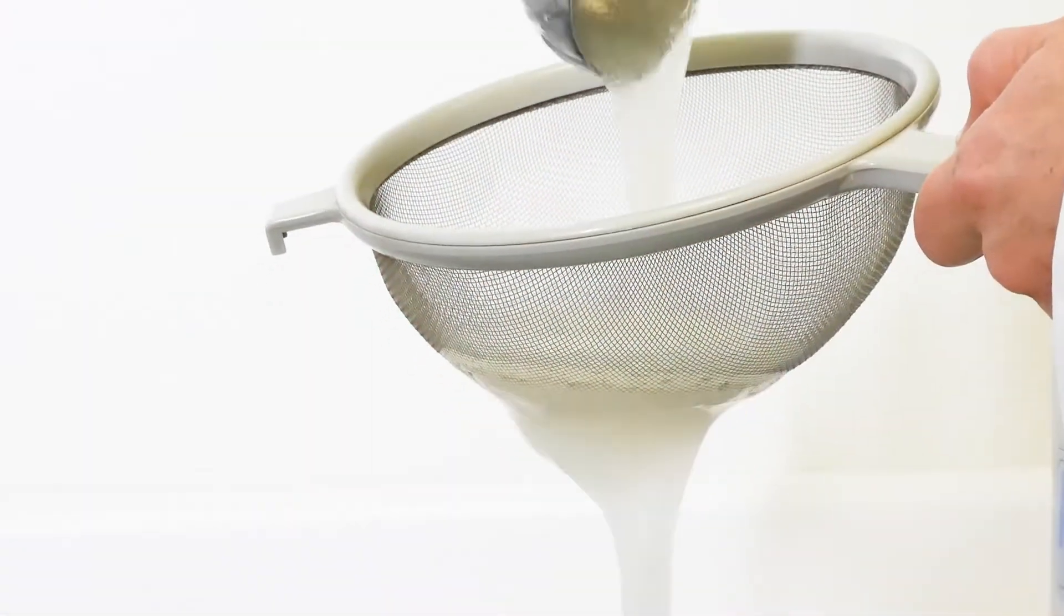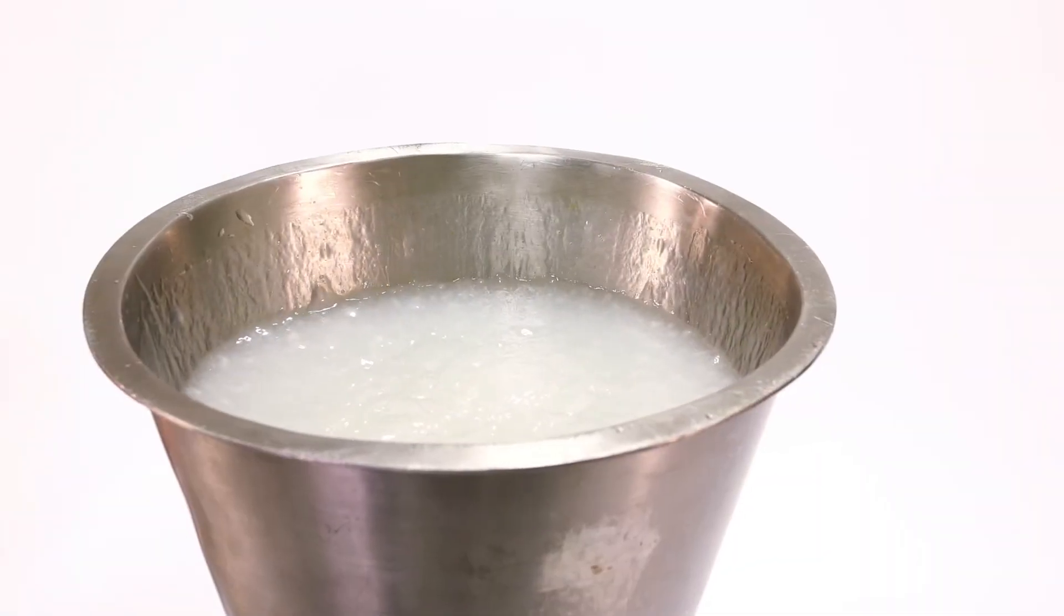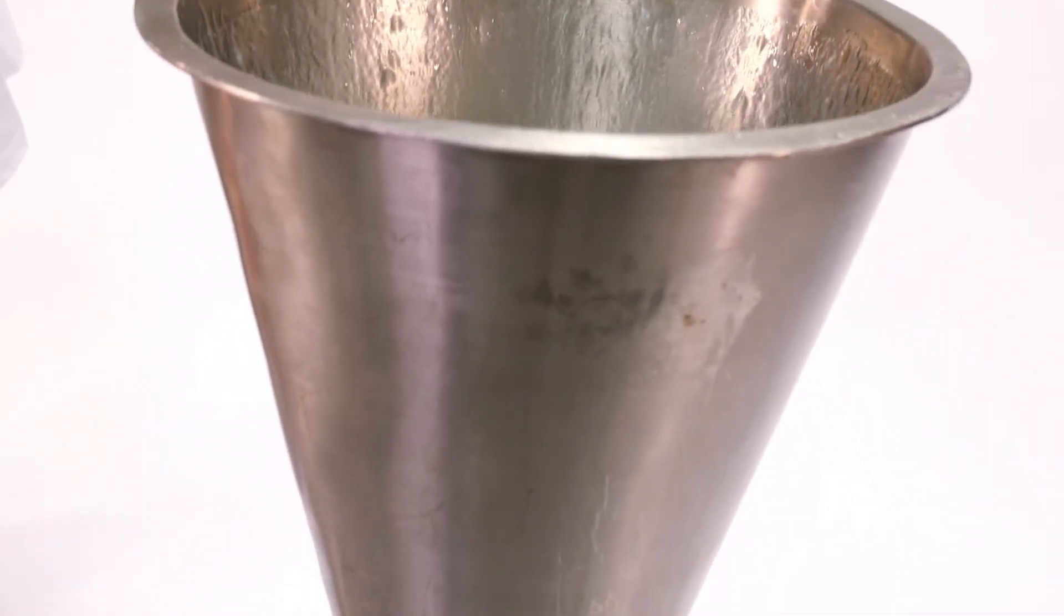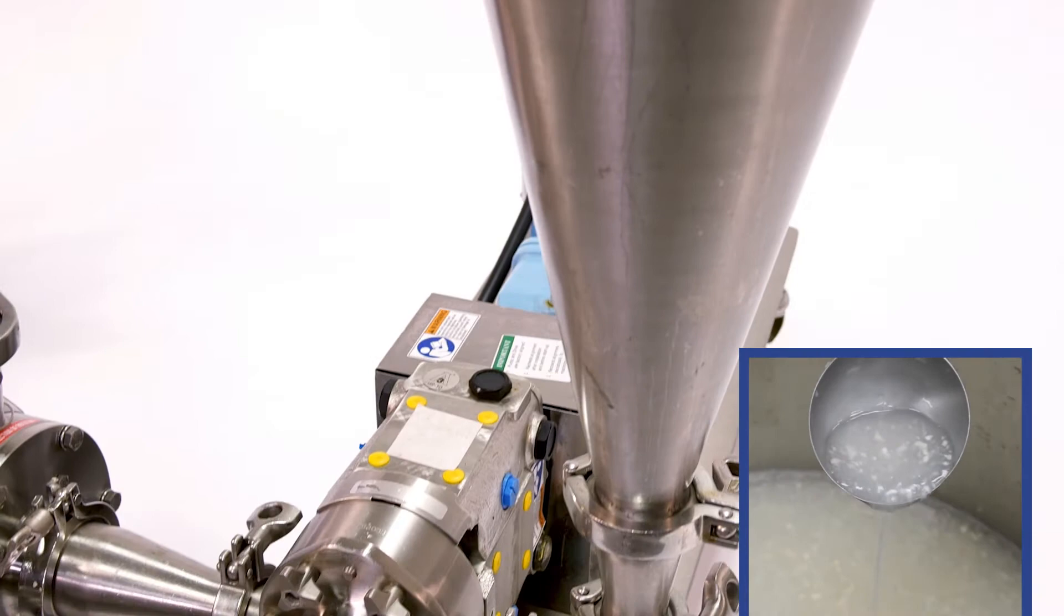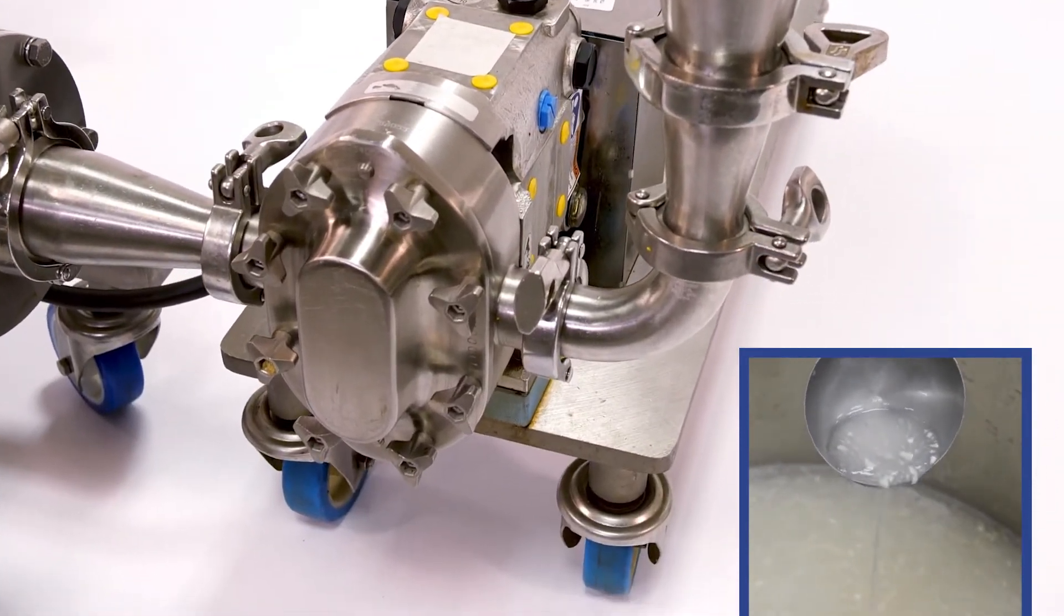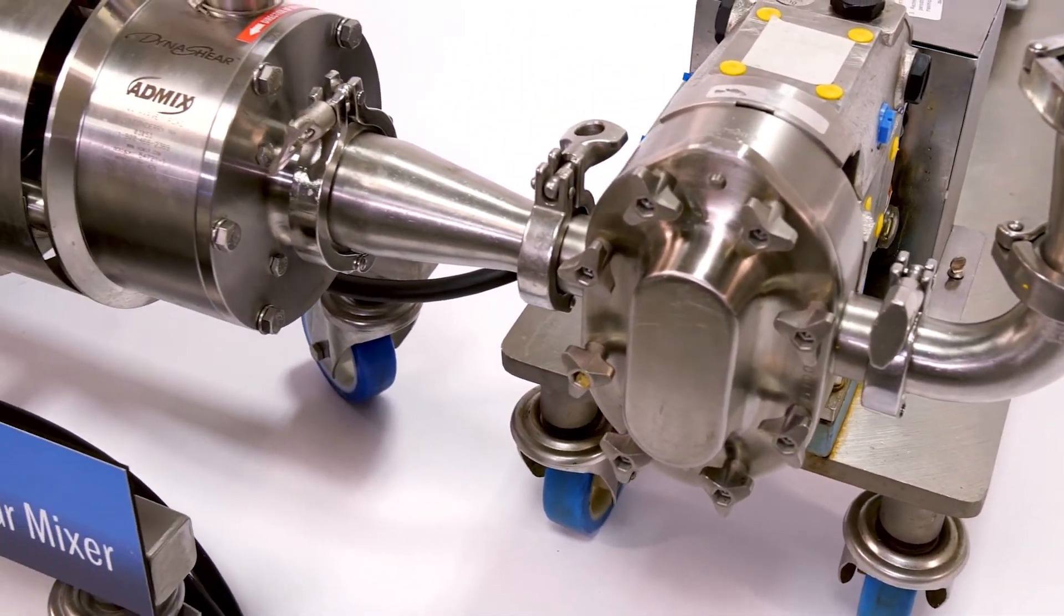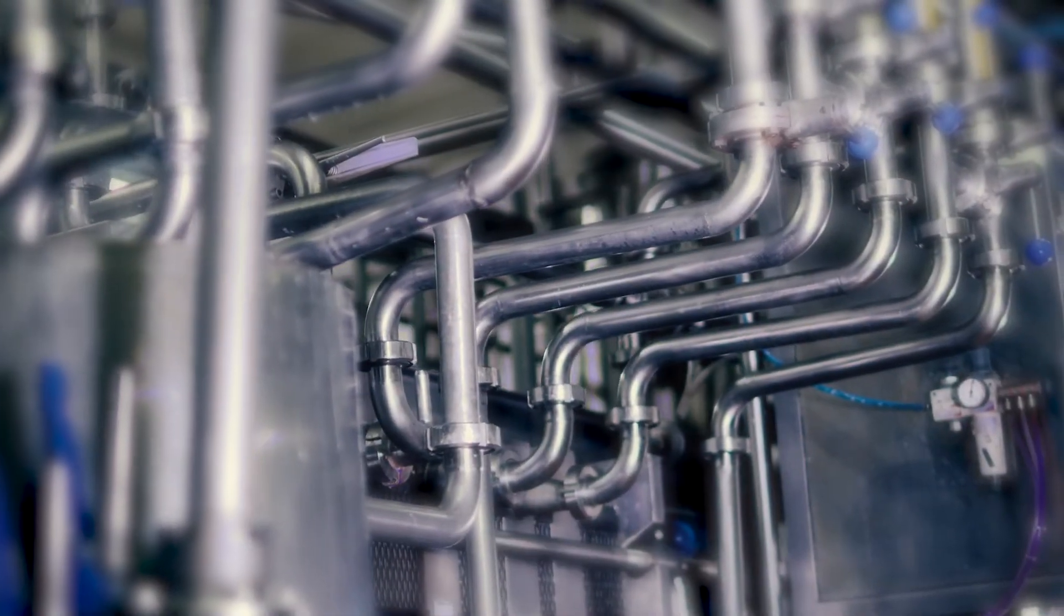agglomerates and fish eyes. The Dynashear is often utilized to augment low shear mixers that leave behind lumps and unmixed product by simply installing it between the mix tank and the next downstream process.